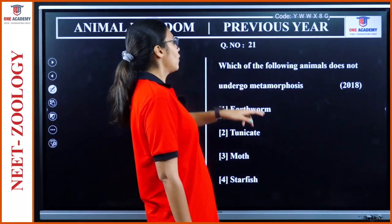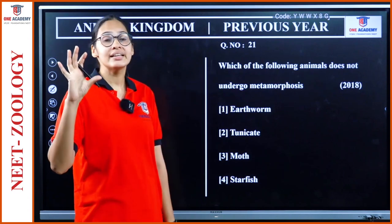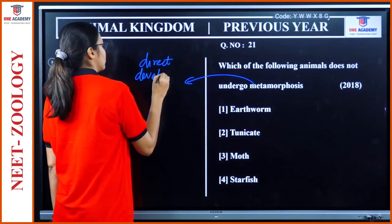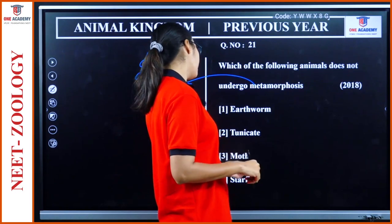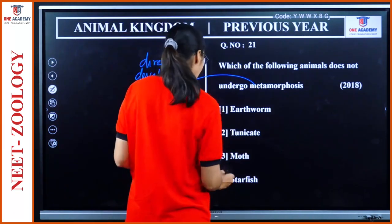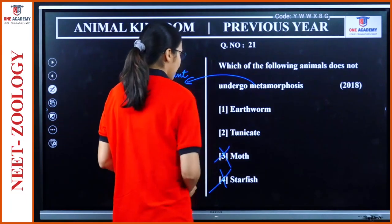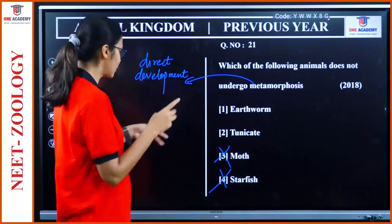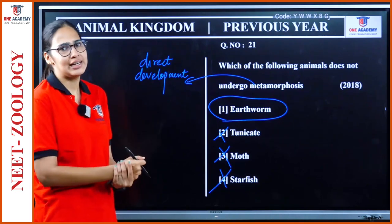Question 21: 'Which of the following animals does not undergo metamorphosis?' Not undergoing metamorphosis means they have direct development. Starfish has indirect development — not this. Moth is a larval stage of butterfly — not this. Tunicata has a larval tail — not this. Earthworm has direct development with no larval stage in its life cycle — so earthworm is the correct answer.